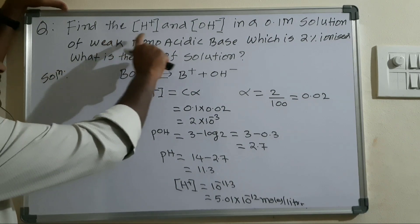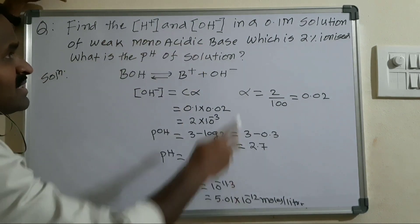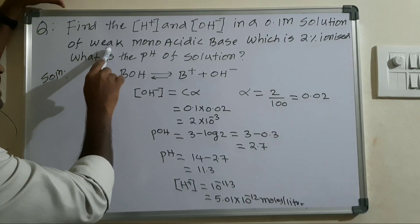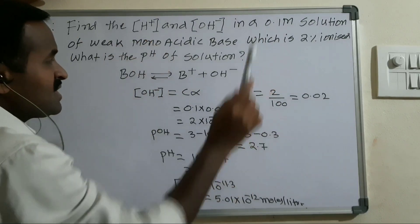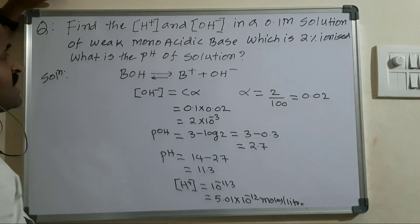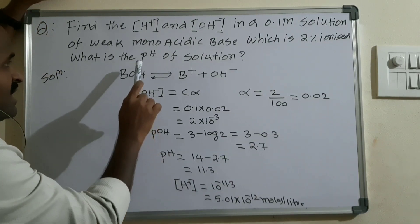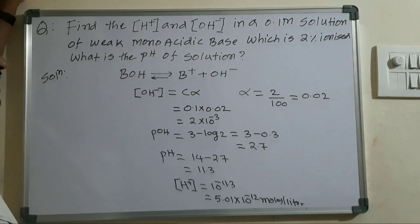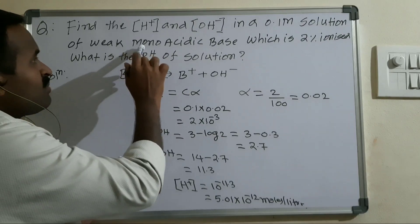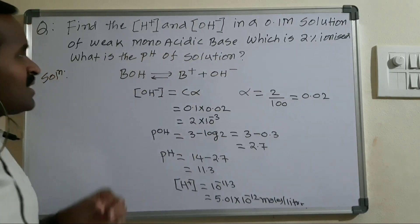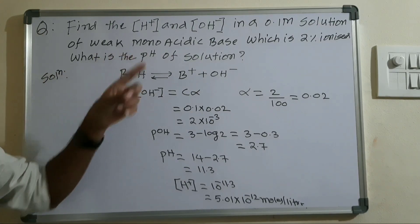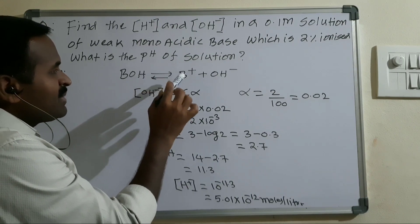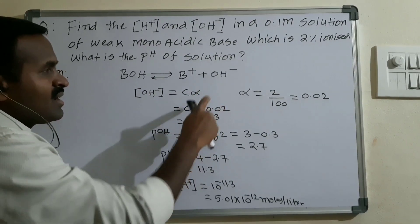The next problem is: find the H⁺ and OH⁻ ion concentration in a 0.1M solution of a weak monoacidic base which is 2% ionized, then find the pH of the solution. Taking the general form of a weak monoacidic base as BOH, it dissociates into B⁺ and OH⁻.